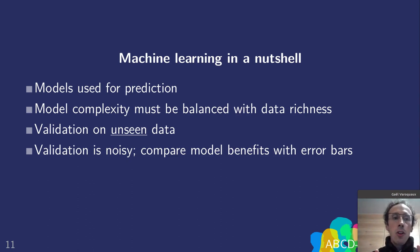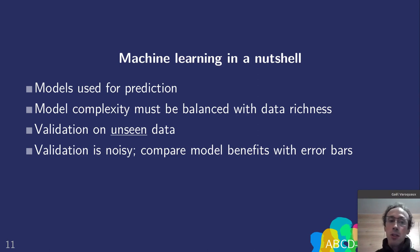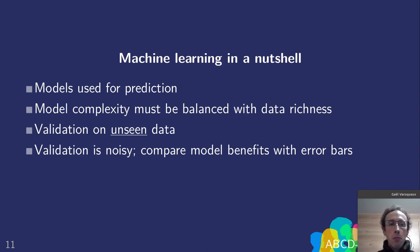To conclude the introduction to machine learning: machine learning models are used for predictions, and may be standard statistical models such as linear regression, but used for prediction. Their model complexity must be balanced with data richness. Validation must be done on unseen data, and this validation is noisy — so we need to compare the model benefits with the error bars as we try to improve our pipeline.